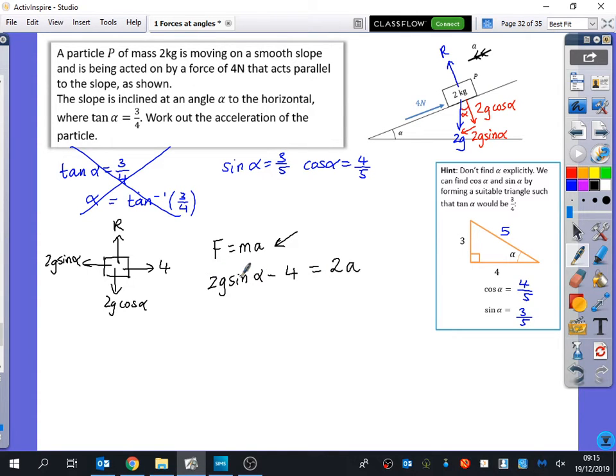I would not substitute in sin α until I've written out that first line because imagine you got this thing wrong, you would get this thing wrong, whereas you would get all the method marks for just using that it was sin α. Take that extra few seconds just to write that line out in detail before substituting in. That's just 2G times sin α, which is 3 over 5, minus 4, and that whole thing divides by 2 to find the acceleration. We should come up with 3.88 metres per second squared down the slope.